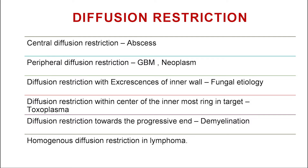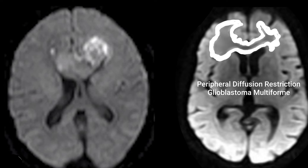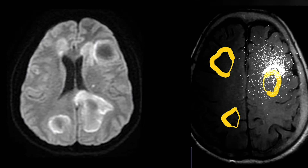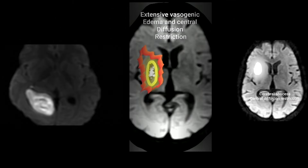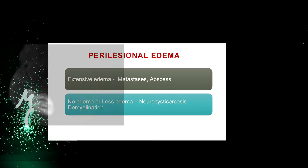Looking at diffusion can help in narrowing the differential of ring enhancing lesions. Central diffusion restriction can be a case of abscess. Peripheral diffusion restriction can be seen in glioblastoma and high grade neoplasms. Diffusion restriction within the excrescences of the inner wall is seen in fungal etiology. Diffusion restriction within the center of the innermost target rim is seen in toxoplasmosis. Diffusion restriction towards the progressive end is seen in demyelination, and homogeneous diffusion restriction is seen in lymphoma.